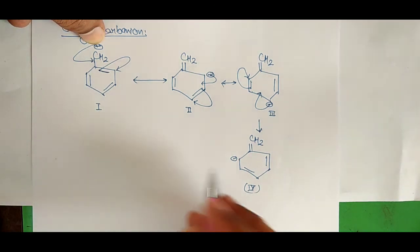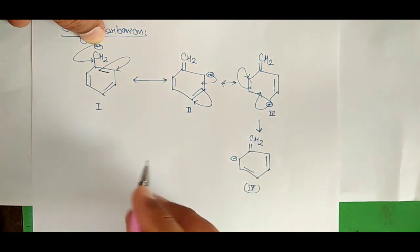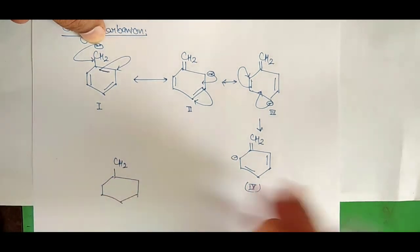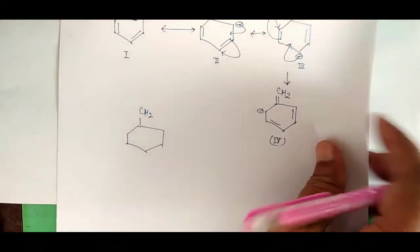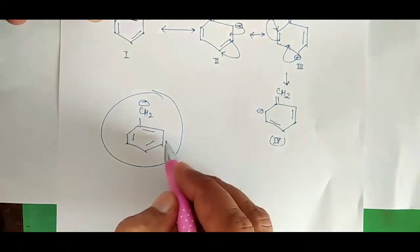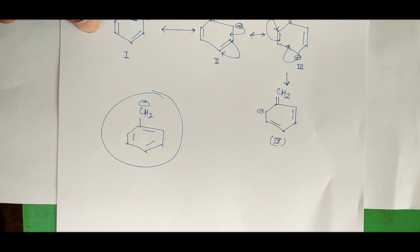Therefore, greater the number of resonating structures, greater the stability, because the negative charge has been dispersed over six carbon atoms including the CH2 carbon. If we compare the relative stability, the benzyl carbanion — with all these resonating structures — is more stable than the allyl carbanion. The benzyl carbanion is stable because, through resonance, the negative charge disperses over six carbon atoms. Thank you friends, please like and subscribe to my channel.